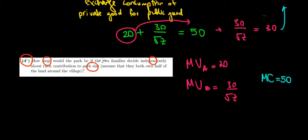So what's the intuition here? Because they decide independently, they care about their own marginal utilities, so they do not take into account the marginal utility to the other party.